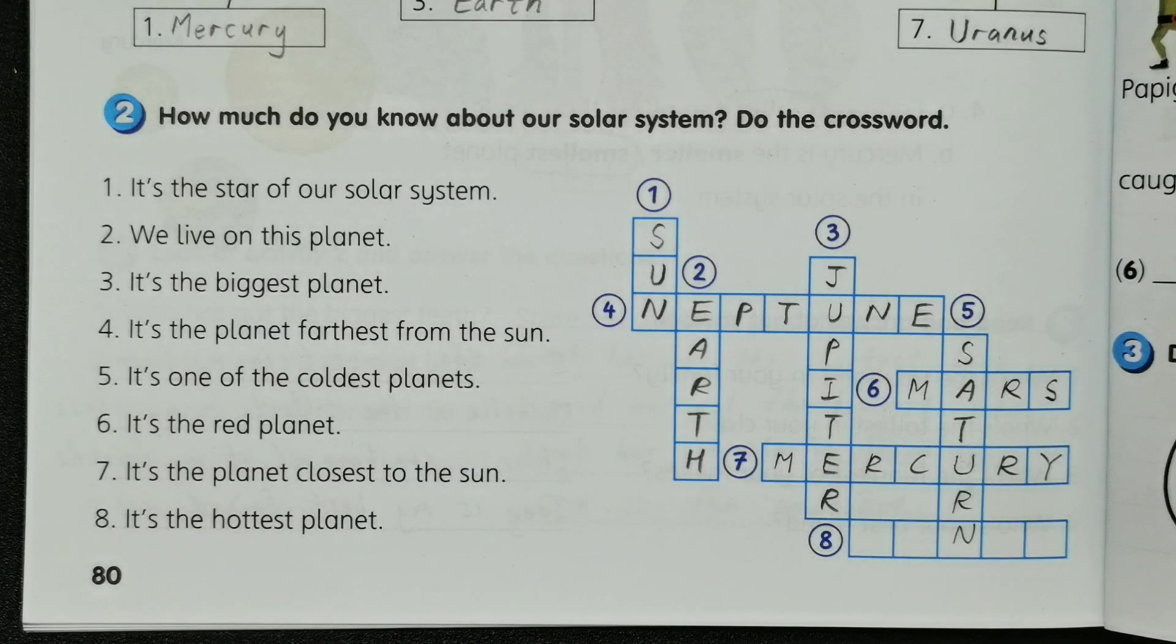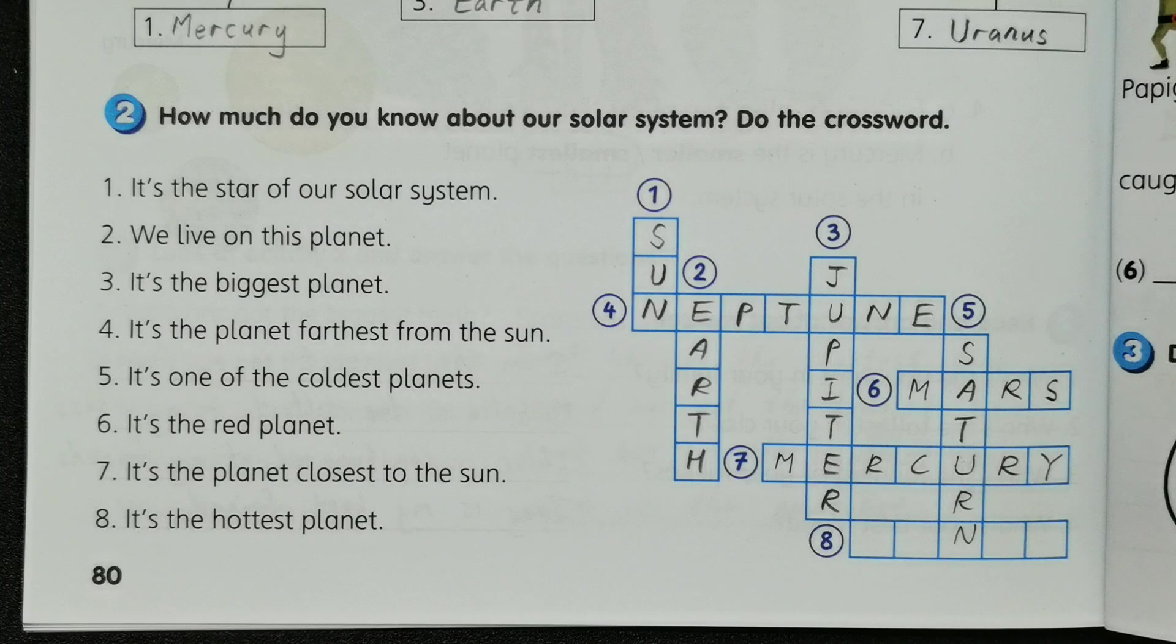And the final one, it is the hottest planet. So it is not necessarily closest to the Sun, the hottest planet is basically the second planet from the Sun, so it is called Venus.